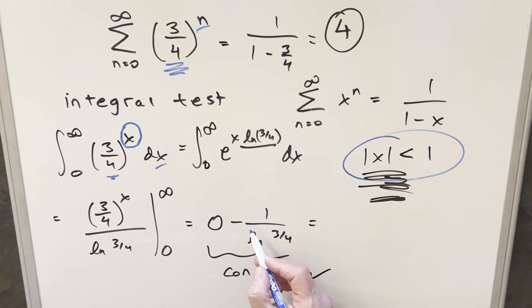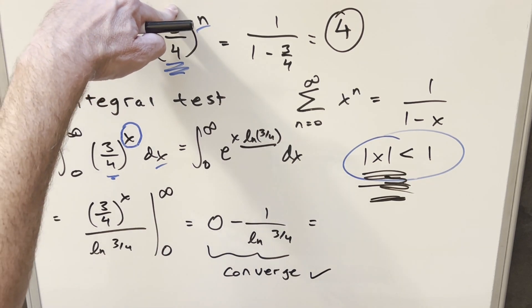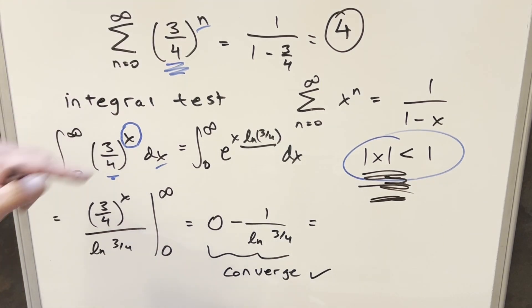One interesting note on this is you may be wondering why it looks like it's a negative number when the series has to be clearly positive. When we determine this is always positive, the area should be positive. Well, it turns out natural log of 3 fourths is a negative number. So if you wrote this as a decimal and you distribute on the minus sign, this is going to be a positive number here.